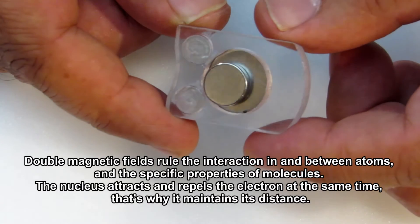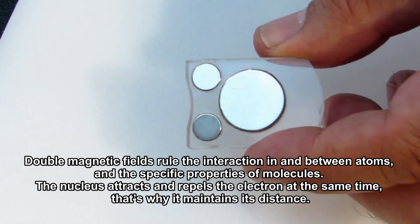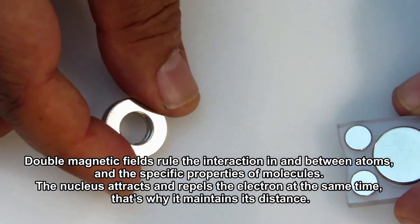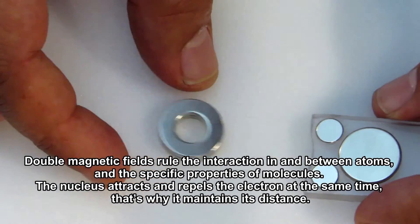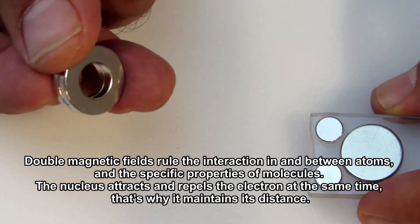Double magnetic fields rule the interaction in and between atoms and the specific properties of molecules. The nucleus attracts and repels the electron at the same time. That's why it maintains its distance.